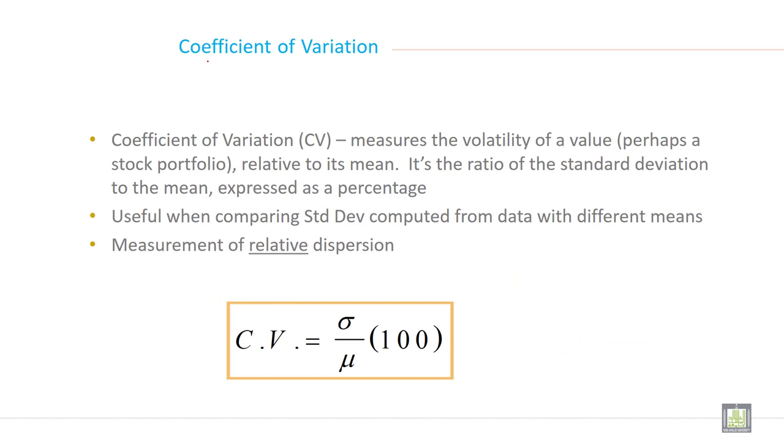Now coefficient of variation. Coefficient of variation, in short it is written as CV. It measures the volatility of a value, perhaps a stock portfolio, relative to its mean.